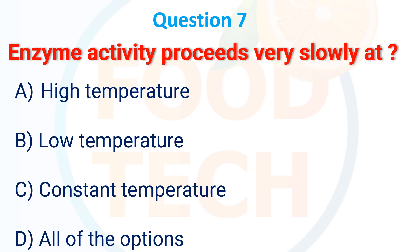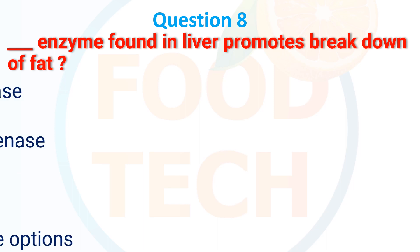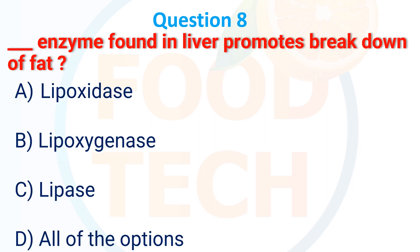Enzyme activity proceeds very slowly at: A. High temperature, B. Low temperature, C. Constant temperature, D. All of the options. The answer is B. Low temperature. The enzyme found in the liver that promotes the breakdown of fat is: A. Lipoxide, B. Lipoxinase, C. Lipase, D. All of the options. The answer is C. Lipase.